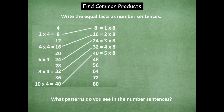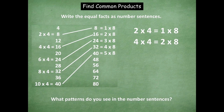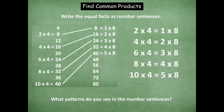Now we're going to write the equal facts as number sentences. For example, two times four equals one times eight — taking the same ones connected by the lines. Then four times four equals two times eight. Go ahead and finish the other number sentences: six times four, eight times four, and ten times four. Click play when you're ready to go over it. Six times four equals three times eight, eight times four equals four times eight, and ten times four equals five times eight.